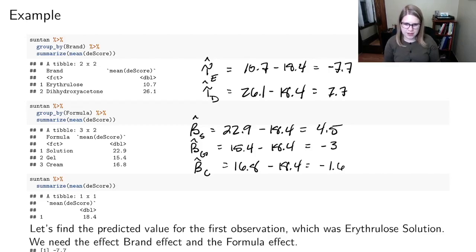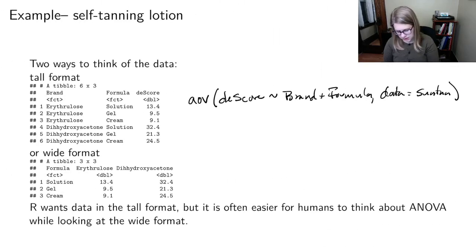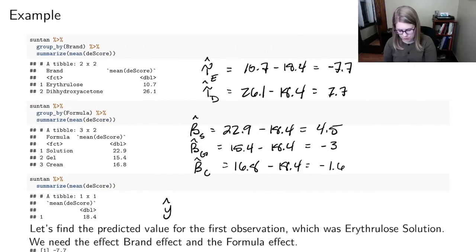So then I've got all my tau's, I've got all my betas. And if I wanted to find a predicted value, y hat for the first observation in my data set, let's go back. So this was in that e brand and solution. So I want to try and make a prediction for that row. So then I would have my grand mean, 18.4,